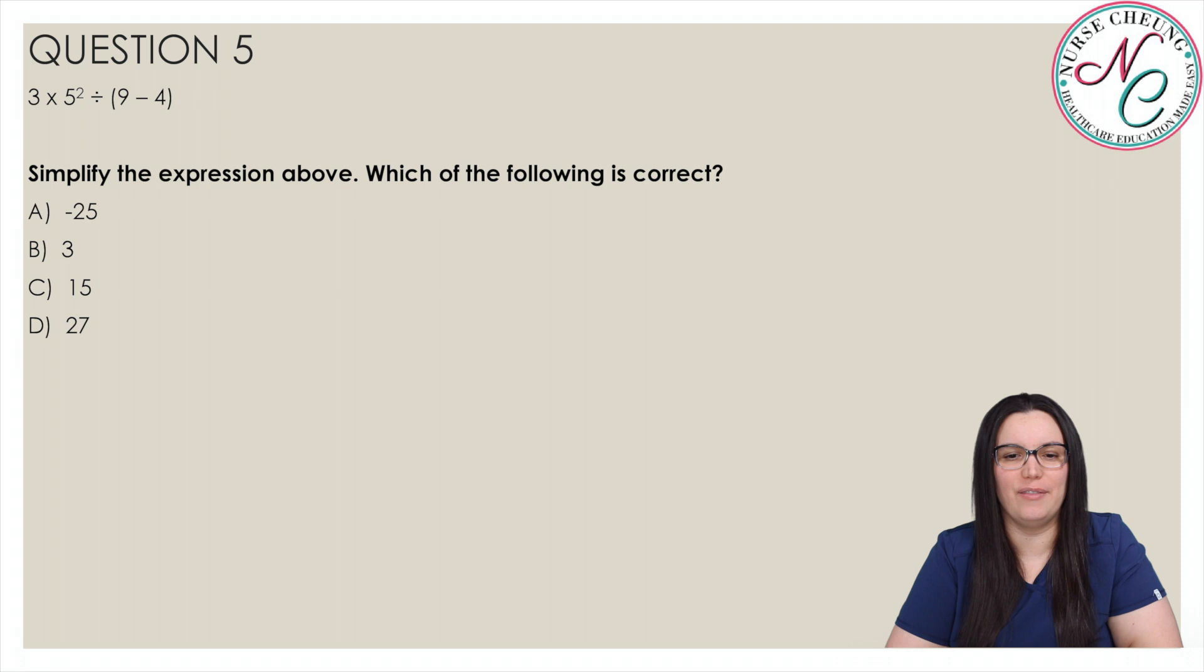3 times 5 squared divided by 9 minus 4. Simplify the expression above which of the following is correct? Is it A, negative 25, B, 3, C, 15, or D, 27? And the correct answer is C, 15.